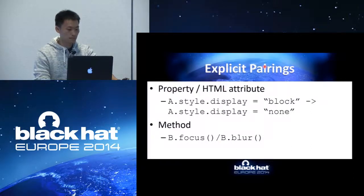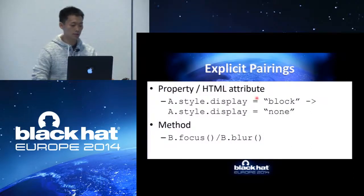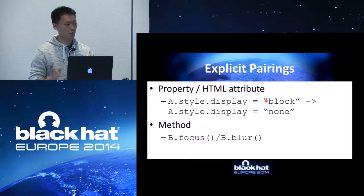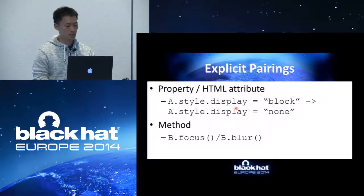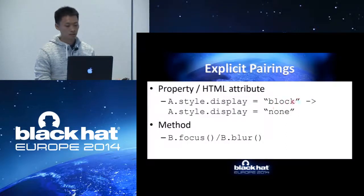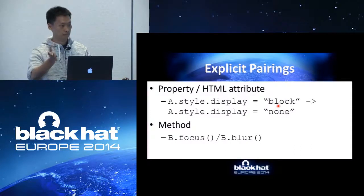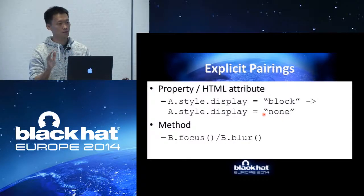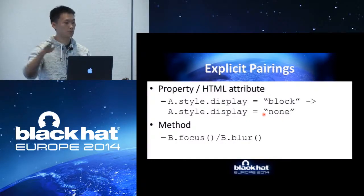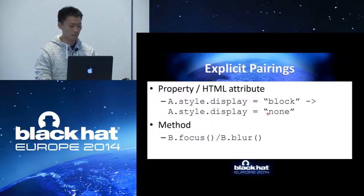For explicit pairing, we change something very straightforward. For example, we have A.style.display — we change it from 'block' to 'none'. 'Block' means render this object as a block element; 'none' means do not render it, it becomes invisible. This will cause the browser to try to release something. This is a pair — an example for a property.